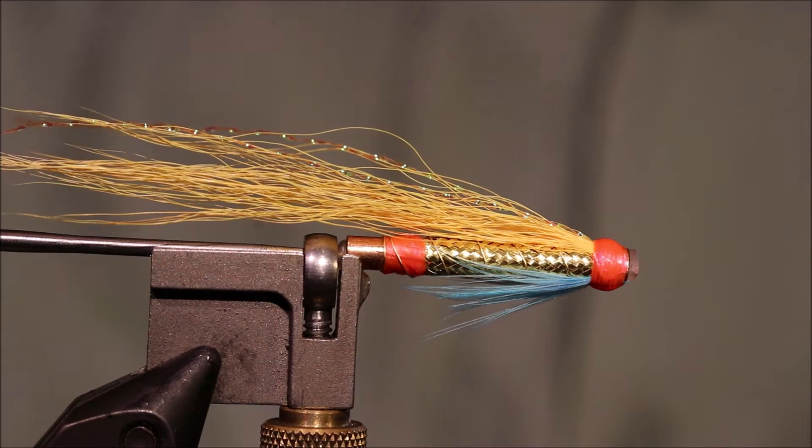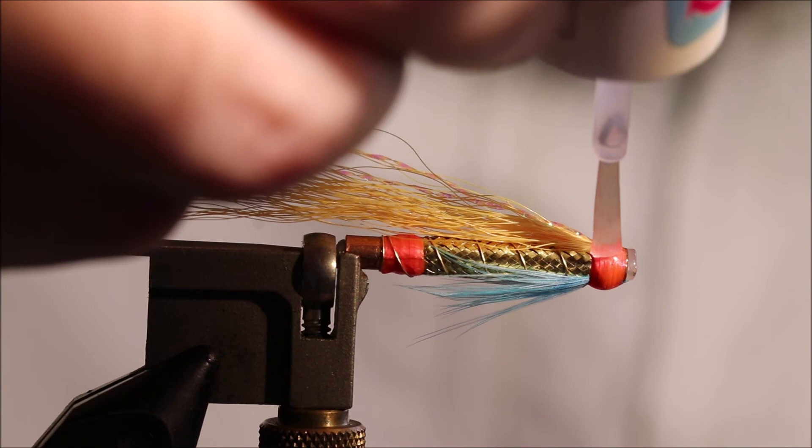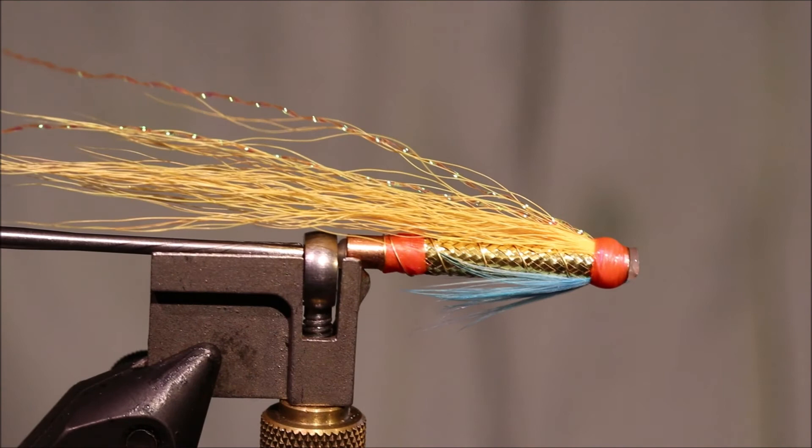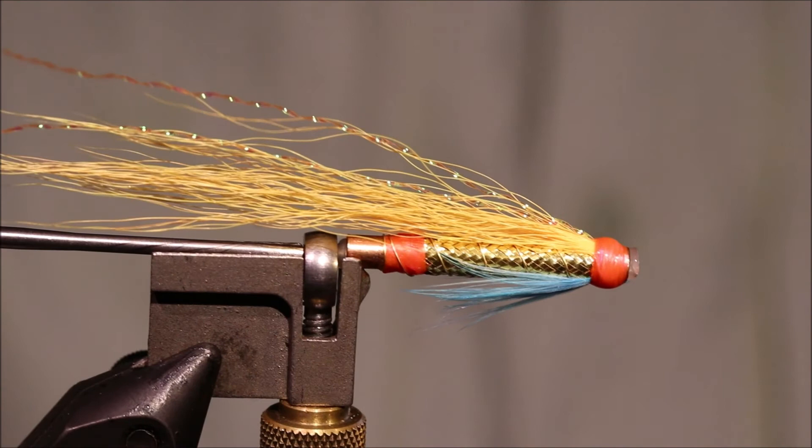So there you go, the Lee Trembler. As I say, not a pattern I've fished, but I will fish it. I think it'll be a good fly when there's a wee bit of colour in the water. So I hope that was useful, I hope you enjoyed it. If you did, please give me a thumbs up below and subscribe to the channel. Take care guys, bye.